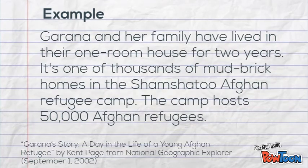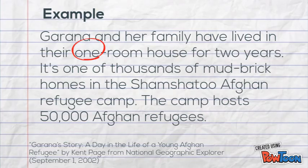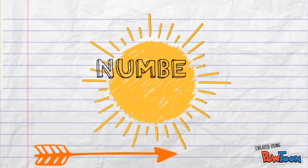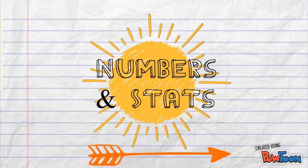I see that Garana's house has only one room, which tells me that it is very small, and that she's lived there for two years, which seems like a long time to live in such a small house. I also see that her home is one of thousands in the camp and that there are 50,000 refugees living there, which tells me that there are a lot of refugees just like Garana. When we notice numbers and stats when we are reading, it is important to stop and ask ourselves: why did the author use these numbers or amounts?